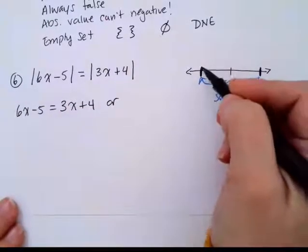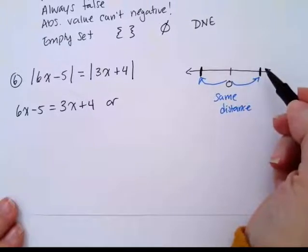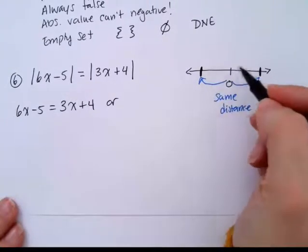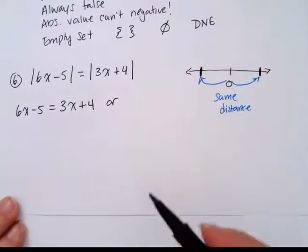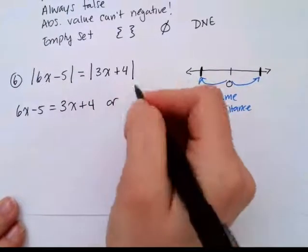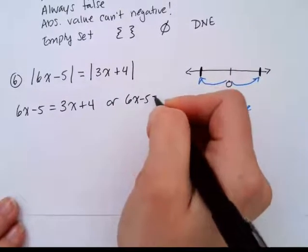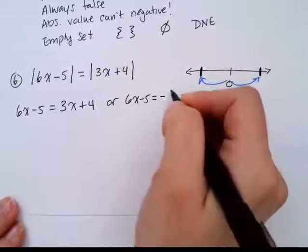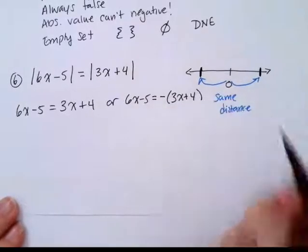Or one expression lives on one side and the other expression lives on the other side of 0, but the same units away. So one expression will be the negative of the other. So our second equation could be written as 6x minus 5 is the negation of 3x plus 4.